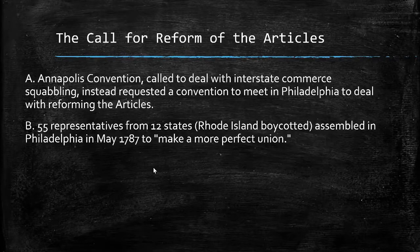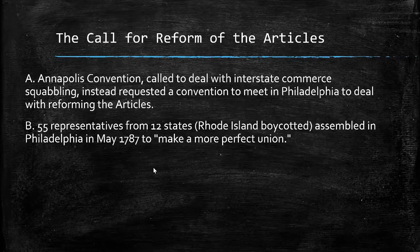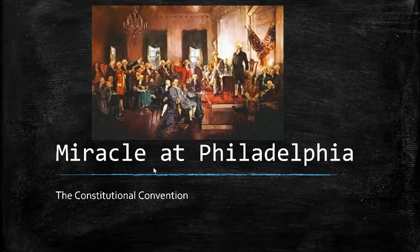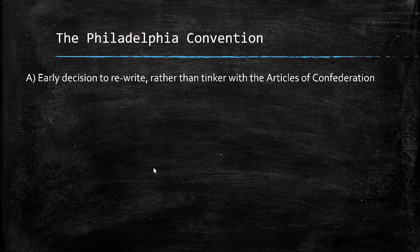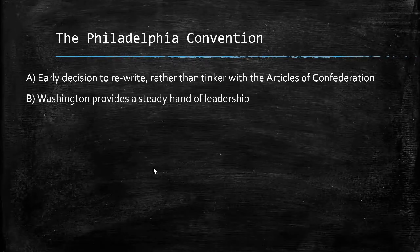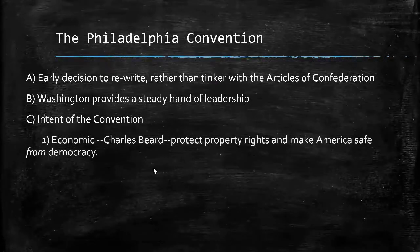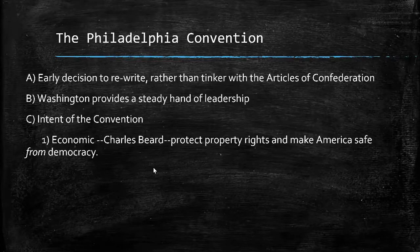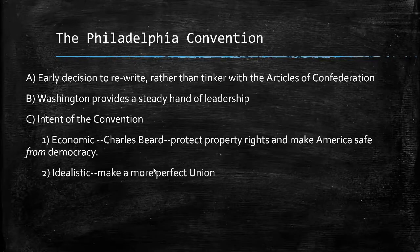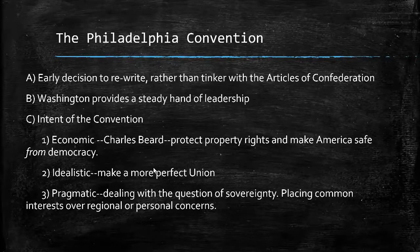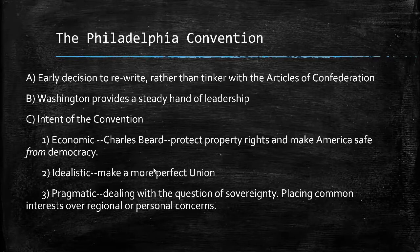The calls for reform led to the Annapolis Convention, which was supposed to be focused on a couple of issues. But quickly, leading figures requested a new convention to meet in Philadelphia to figure out how to reform the Articles of Confederation altogether. At the Constitutional Convention in Philadelphia in 1787, led by George Washington and guided by the ideas of James Madison, there was an early decision to write a new government rather than tinker with the Articles. Washington provided a steady hand of leadership. There are different interpretations about the intent of the Founding Fathers: historian Charles Beard says it was more about protecting property for the wealthy; the idealistic interpretation holds they sought a more perfect union; the pragmatic interpretation holds they were dealing with questions of where sovereignty resides — the states or national government — and needed to place common interests over regional concerns to create a stable government.